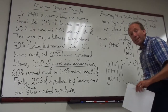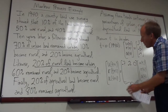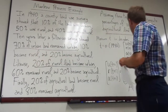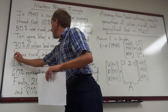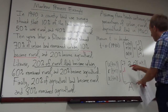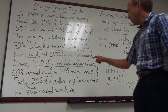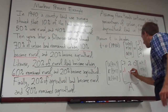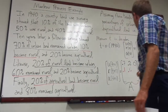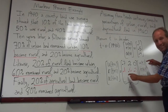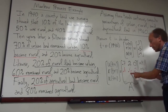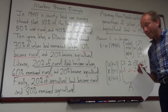Now let's look at the rural land. How much land will be rural after 10 years? 10% of the urban land becomes rural — I'll circle that in red — so that's 0.1. 60% of the rural land remains rural. And 20% of the agricultural land becomes rural. So the rural land next decade is 10% of current urban, plus 60% of current rural, plus 20% of current agricultural.